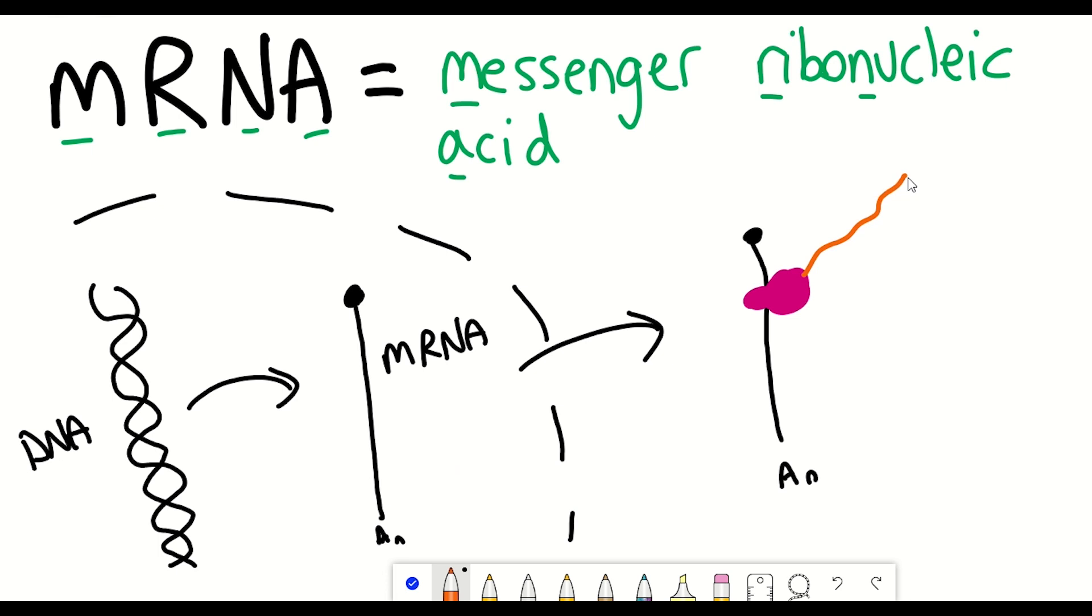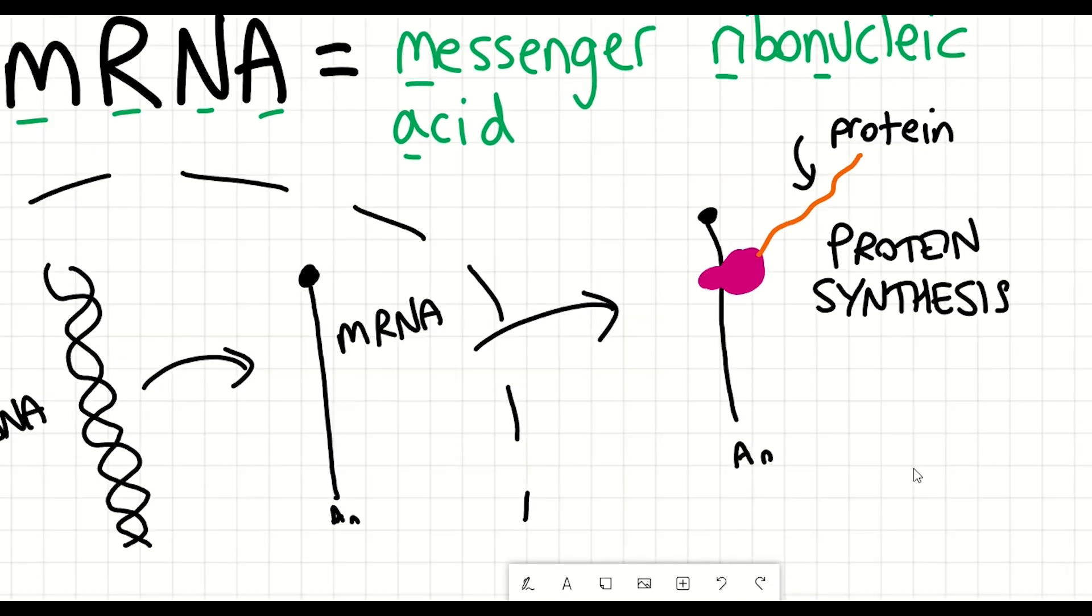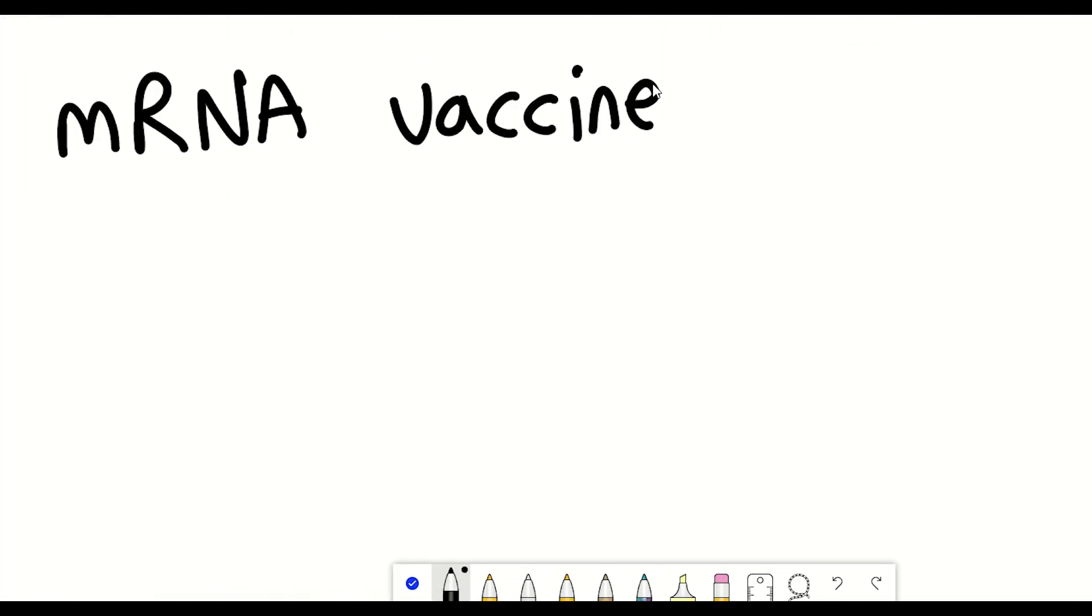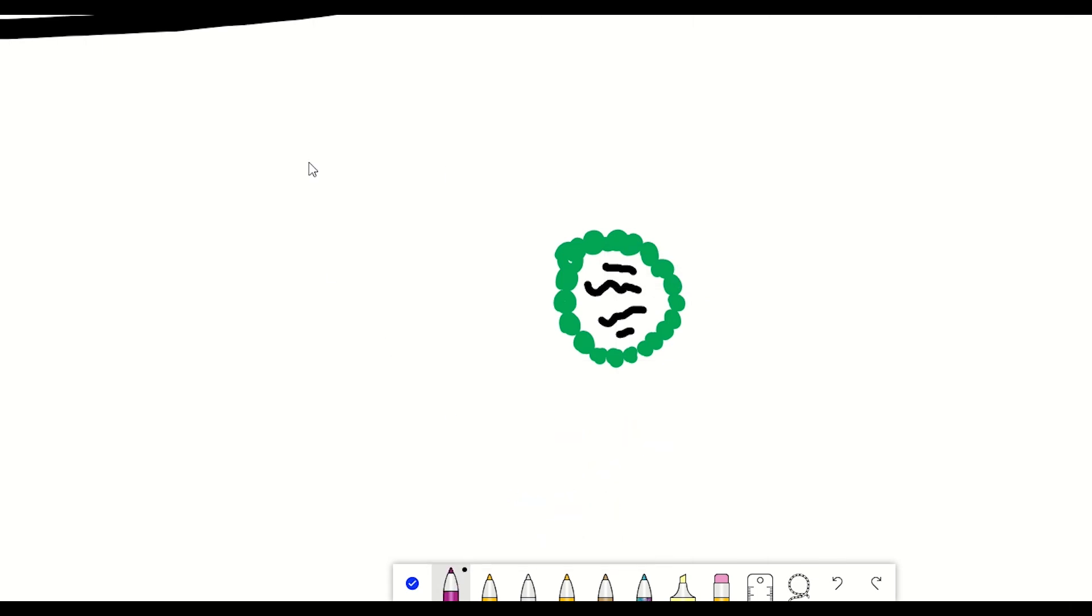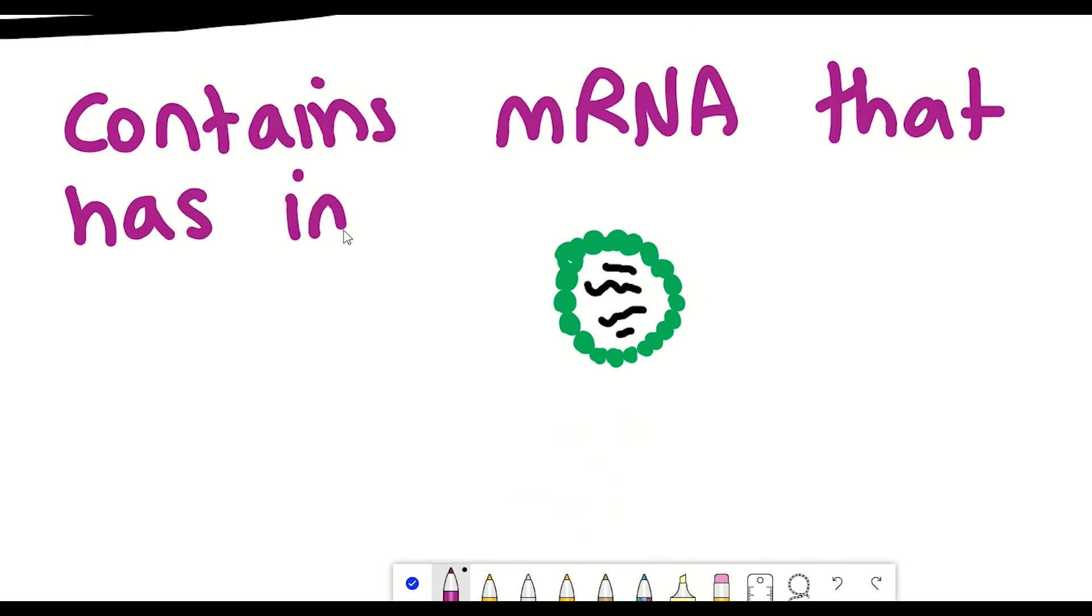So mRNA contains the genetic codes that the body can use to produce a protein. So in the context of an mRNA vaccine, the vaccine contains mRNA that contains the information to produce antigens for a specific pathogen.